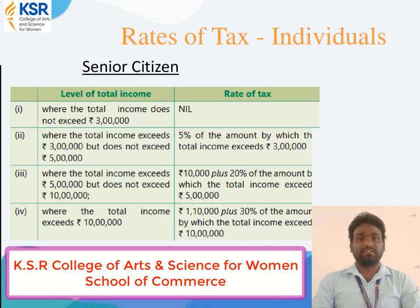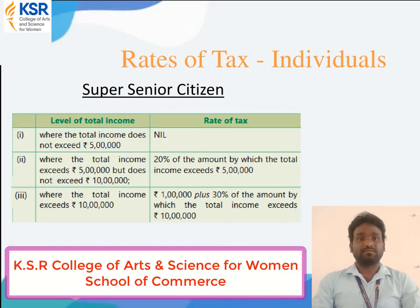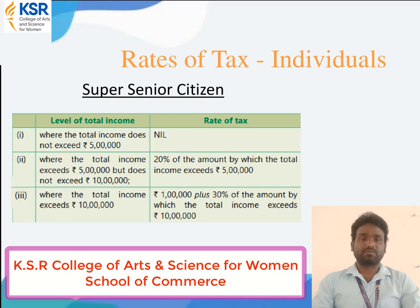Under super senior citizen: where total income does not exceed five lakh, the rate is nil. Where total income exceeds five lakh but does not exceed ten lakh, the rate is twenty percent of the amount by which total income exceeds five lakh. Where total income exceeds ten lakh, the rate is one lakh plus thirty percent of the amount by which total income exceeds ten lakh. Please remember the tax rates for non-senior citizen, senior citizen, and super senior citizen.